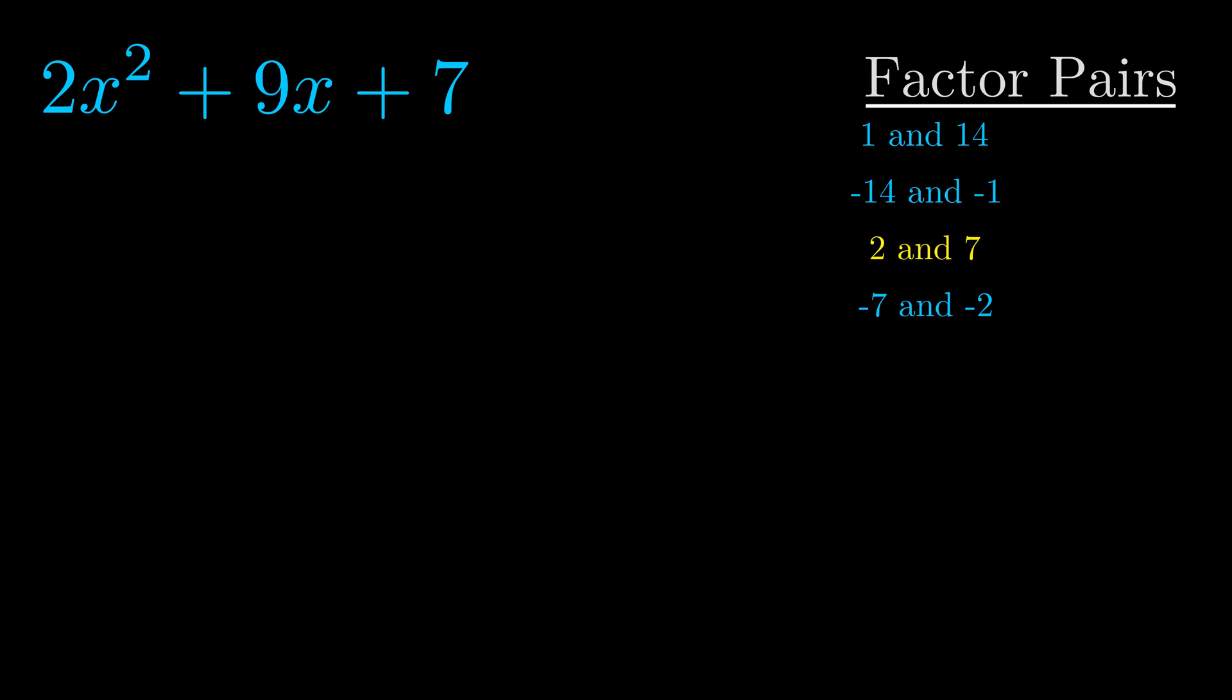And really this is the only factor pair that we need. Now once we have this factor pair, what we want to do is use it to split up the b value.